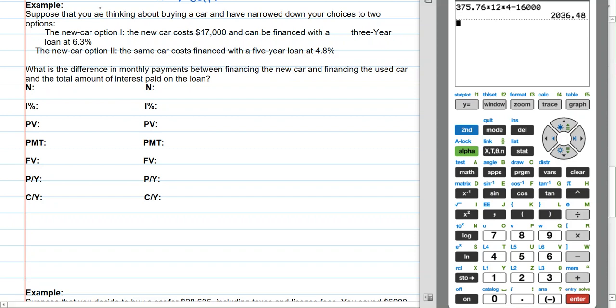So suppose you are thinking about buying a new car. Option one, the new car option, is financed with a three-year loan at 6.3%.